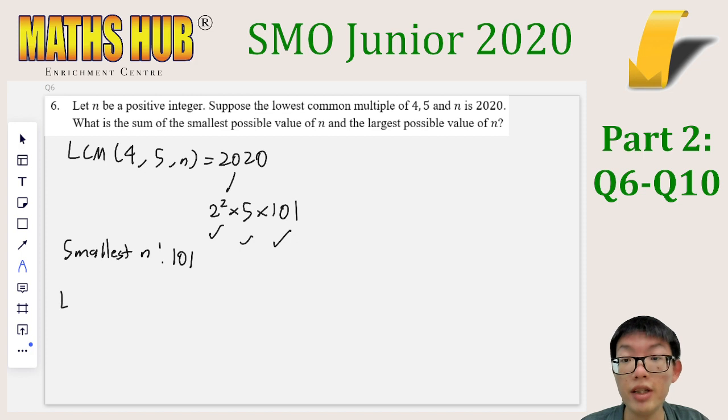Conversely, if we are looking for the largest n, we are looking for how far can you go such that 2020 is still going to be a common multiple of 4, 5, and n. In other words, n should be the biggest possible factor of 2020, which is 2020 itself. This tells us that if we add together 101 and 2020, the answer is 2121.